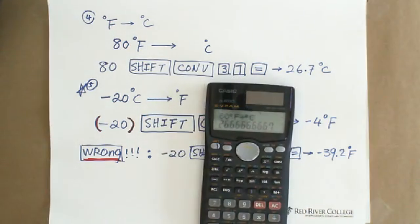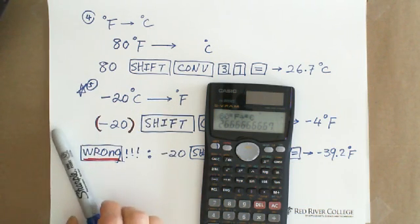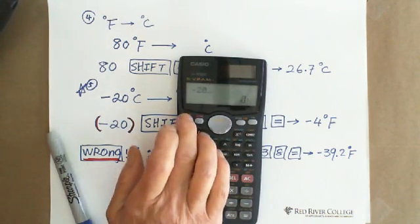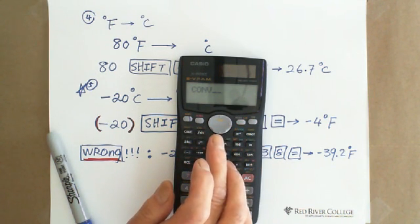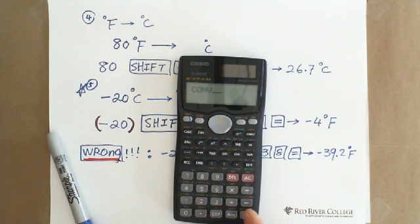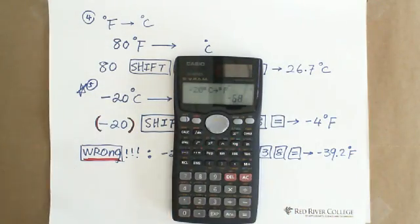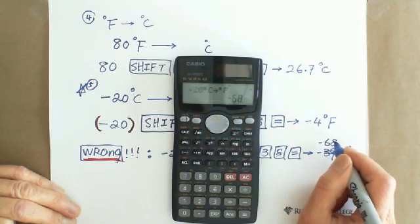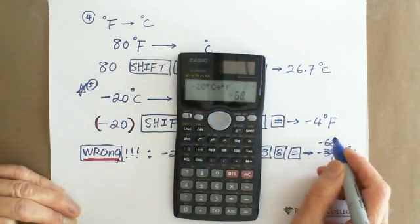And, but when you use the negative number, for example, negative 20 degree Celsius equals how many Fahrenheit. So if you just using negative, you say negative 20. And then shift conversion. You got from Celsius degree to Fahrenheit, which is the code number is 38. I hit equal sign. So you got negative 60. Celsius degree equals negative 68. Here is negative, give you negative 20, negative 68. Negative 68 degree Fahrenheit, which this is wrong. This is wrong.